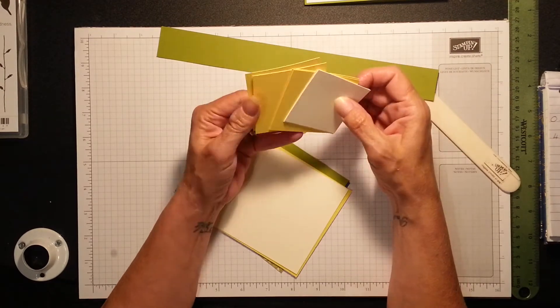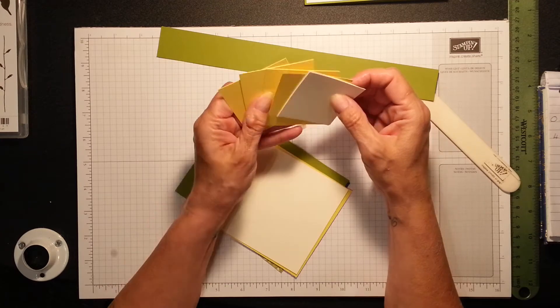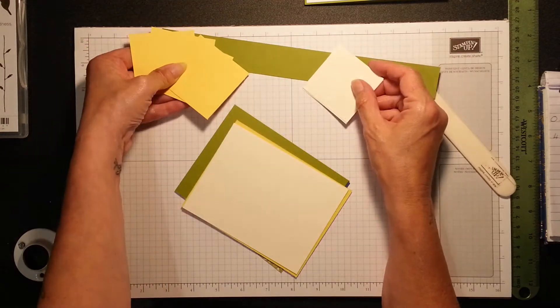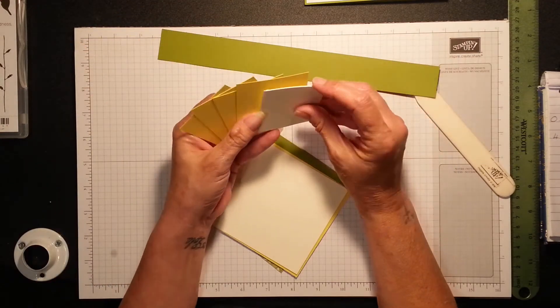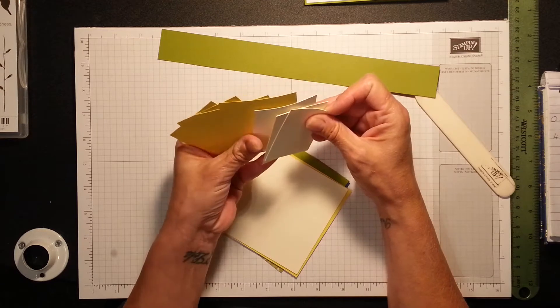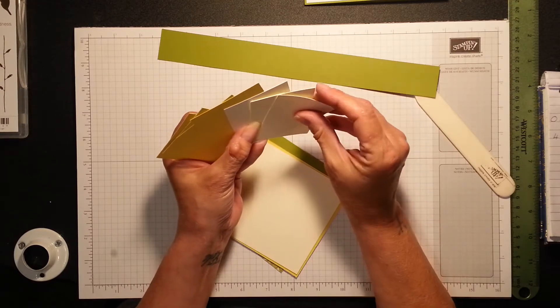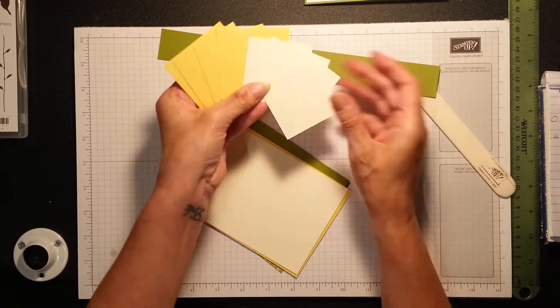And there's 4 of each of those. That's Daffodil Delight, that'll look lovely. And Very Vanilla. So you've got 4 of each.